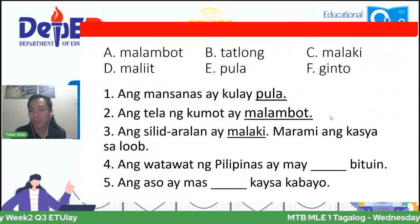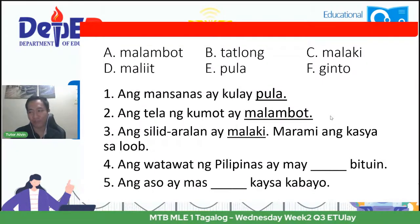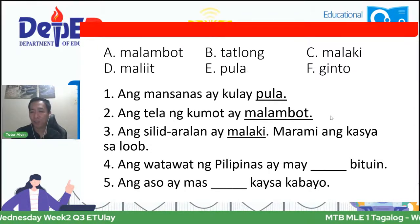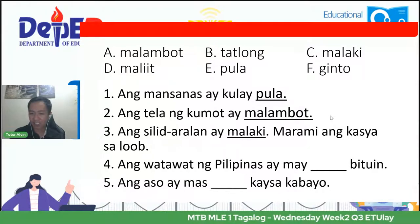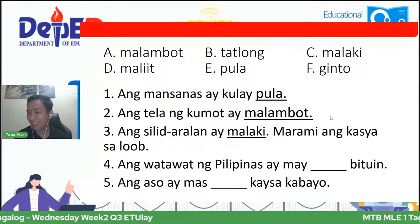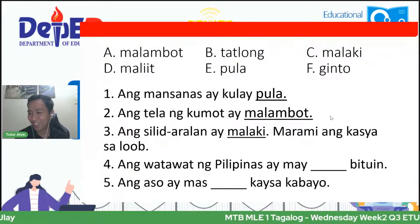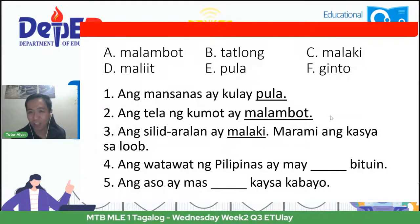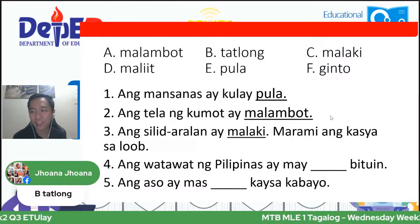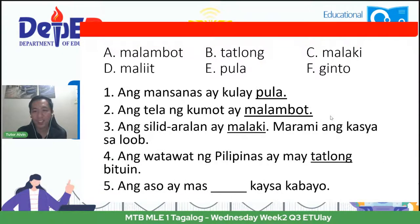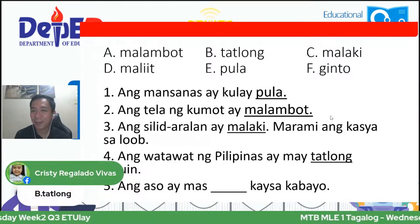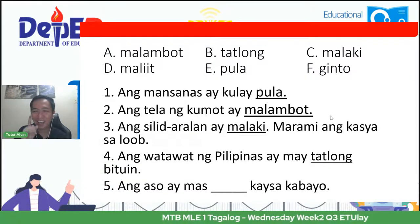Pang-apat, ang watawat ng Pilipinas ay may ___ na bituin. Sabi ni John Jacob, tatlo. Sabi ni Christy, tatlo. Sabi ni Arlene, tatlo. Sabi ni Joanna, tatlo. Sabi ni Candelaria, tatlo. Ang tamang sagot ay C — tatlong bituin. Ang gagaling!